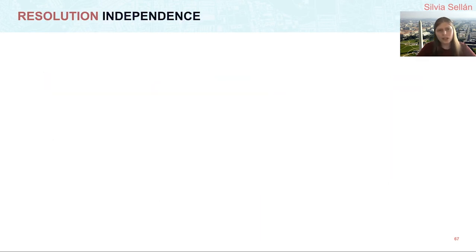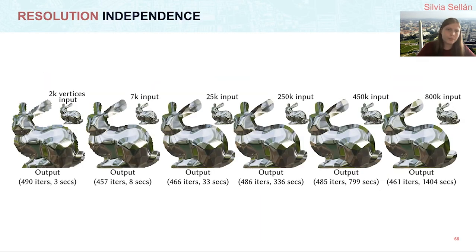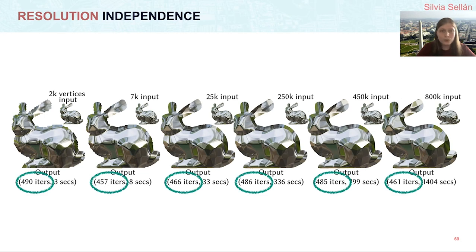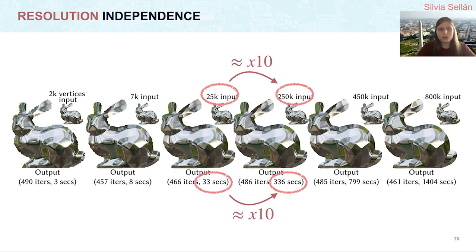Now, let's examine our claim of resolution independence. We run our method in six differently upsampled versions of this bunny, from 2000 vertices to almost a million vertices. And note that the outputs are very similar, almost visually indistinguishable from the second onwards. Furthermore, we know that the ADMM iterations needed for convergence remain roughly constant, while the actual wall clock time for its complete run of our method grows roughly linearly with the size of the input.